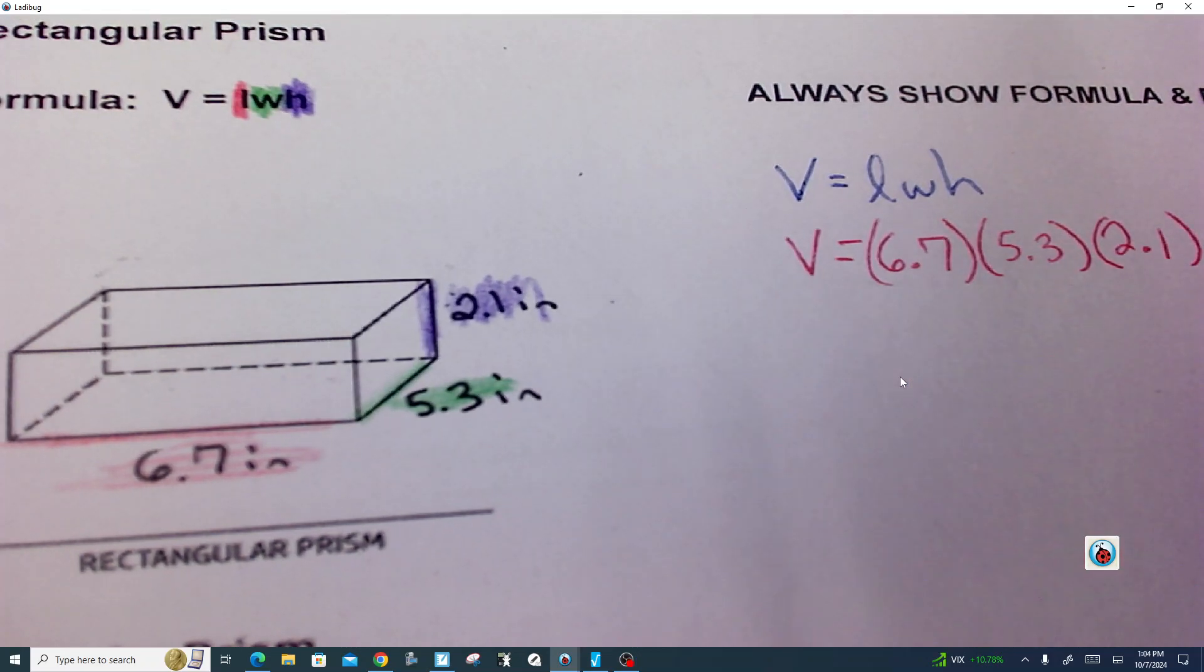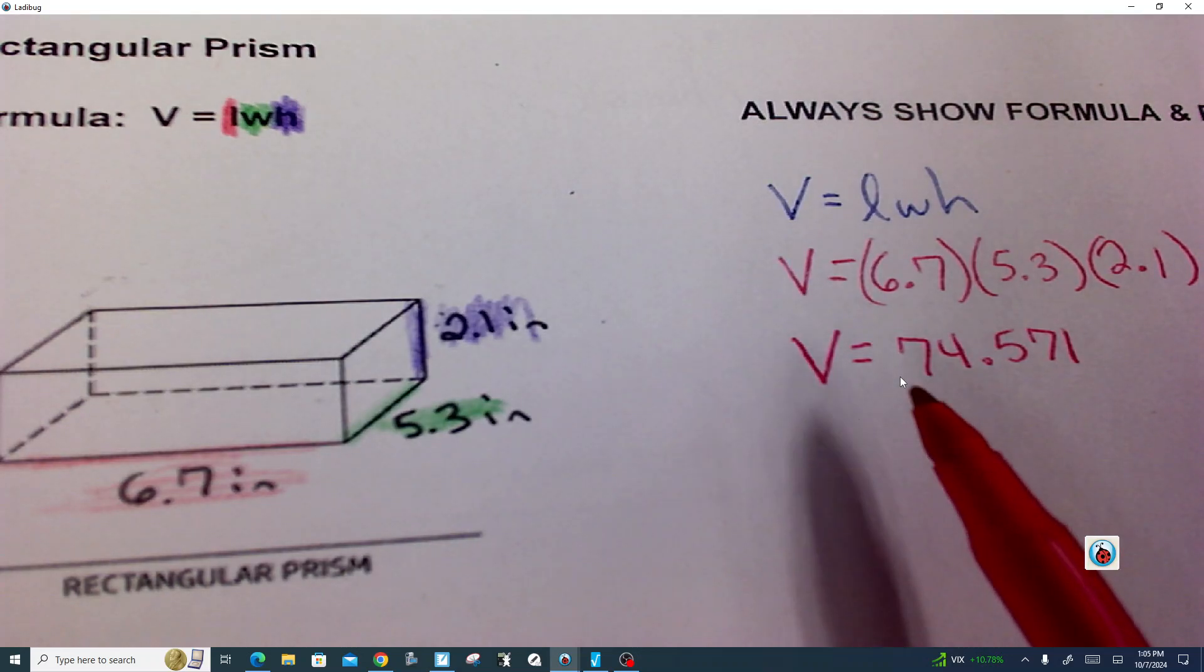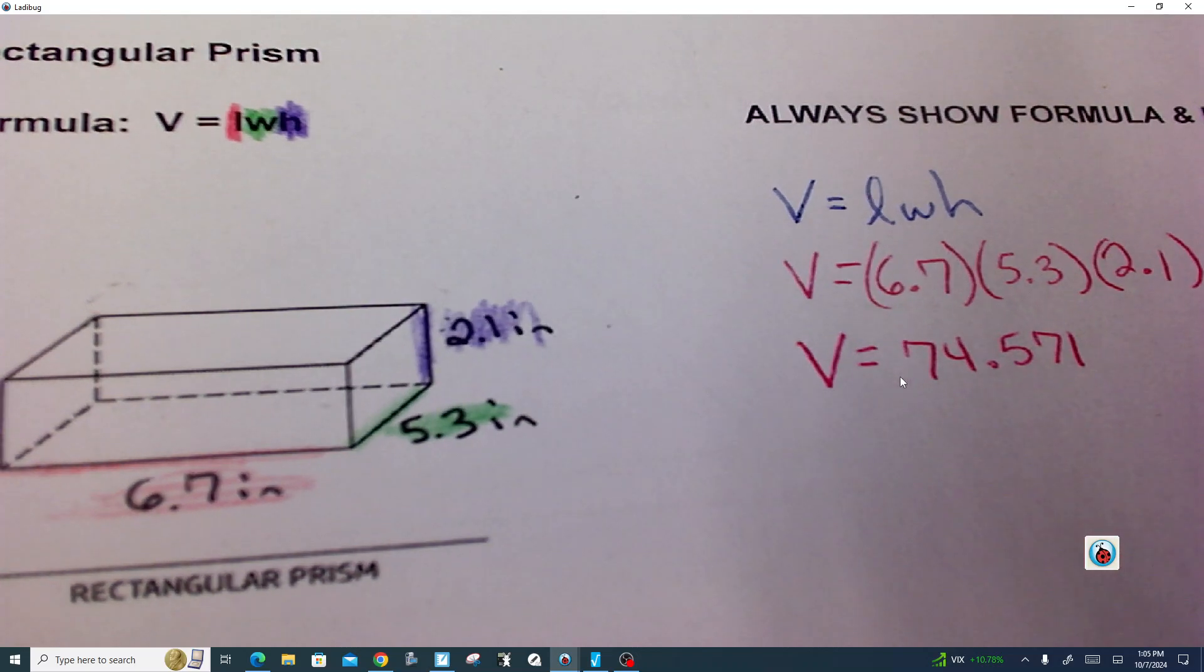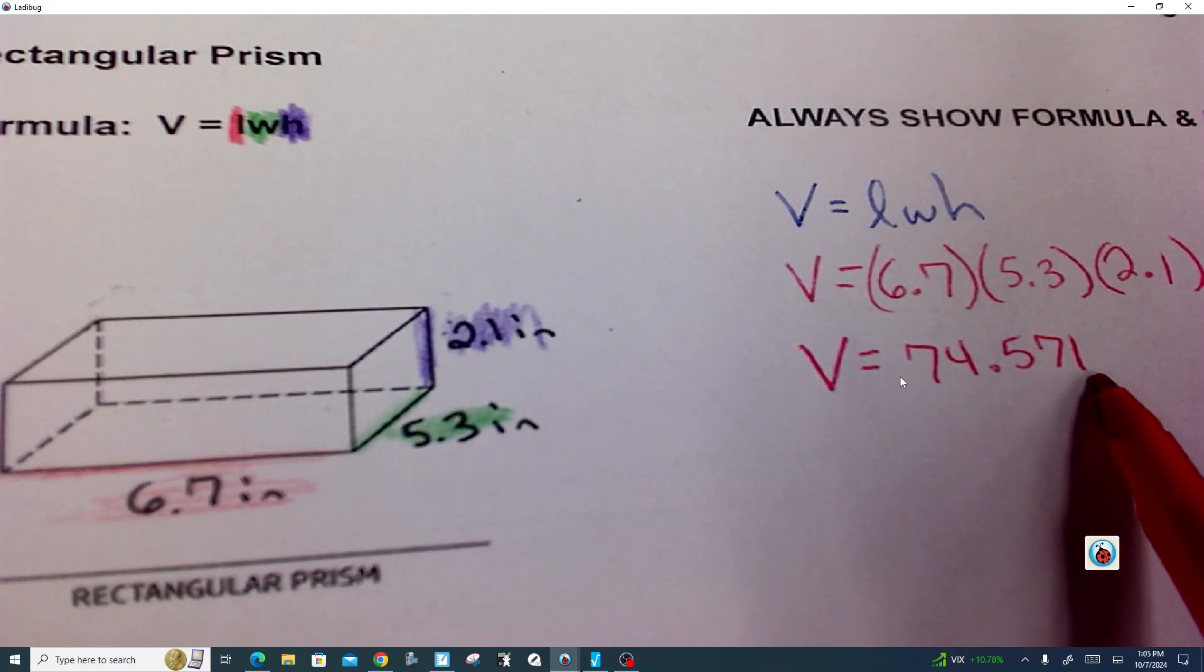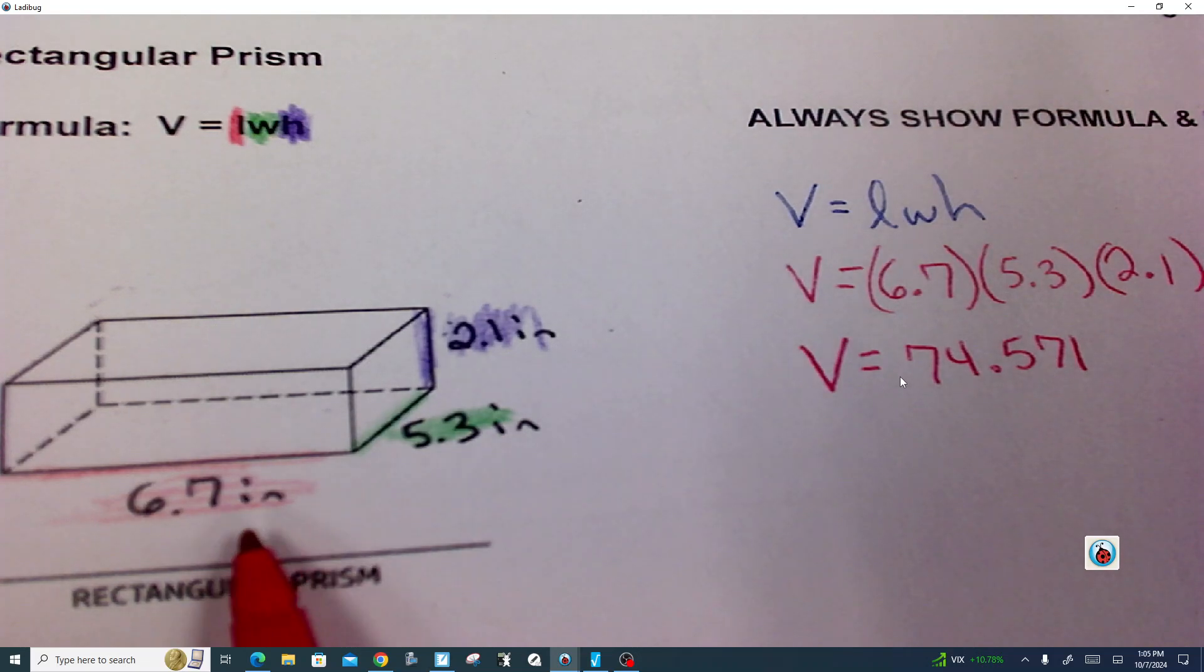Can you multiply these three numbers together and tell me what your answer is? And as you just told me, seventy-four point five seven one, or seventy-four and five hundred seventy-one thousandths. Now what would your units be?